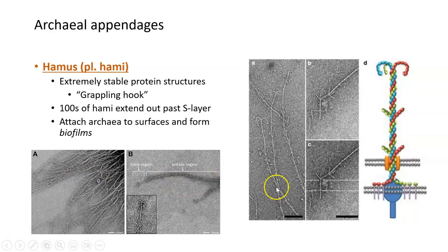If you look at these images here, they're showing electron microscope pictures of these hundreds and hundreds of haemi that extend out past the S-layer in an archaeal cell out into the environment. They have a specific region here called the prickle region, which has a couple of little barbs coming off of it. Then they end in this hook region where their grappling hook structure can be seen.